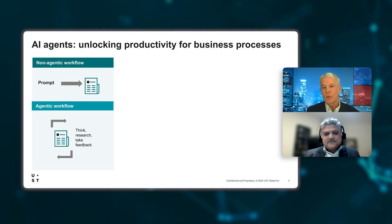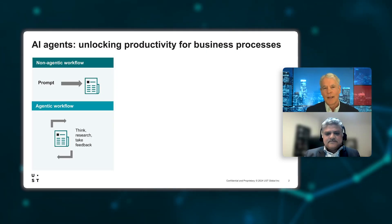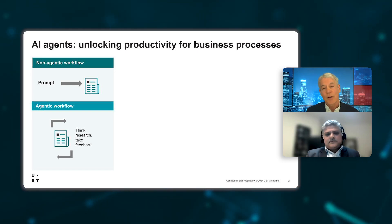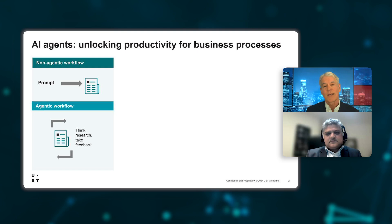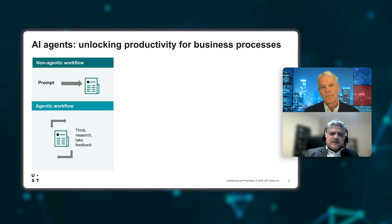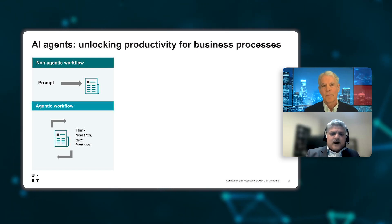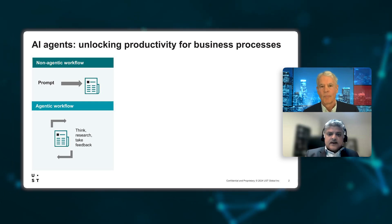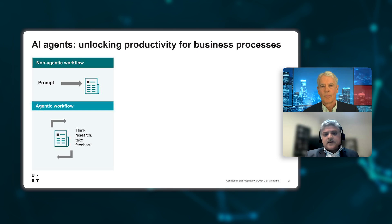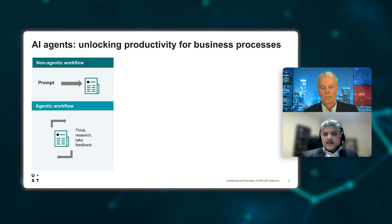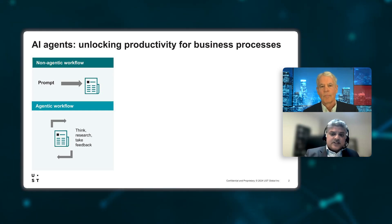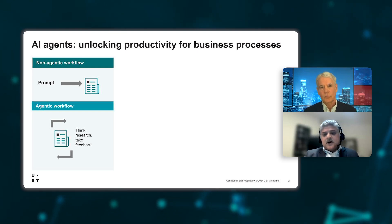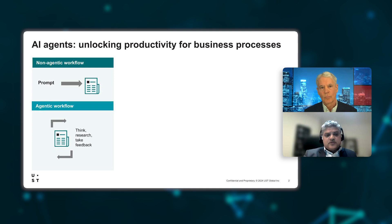Most people are familiar with tools like ChatGPT, but can you explain how agentic AI is different from the query and response model of a tool like ChatGPT? Agentic AI is a form of artificial intelligence designed to operate with a degree of independence, adapting to various tasks and environments with minimal human oversight. An agentic AI is different from ChatGPT as it exhibits more autonomous and goal-driven behavior.